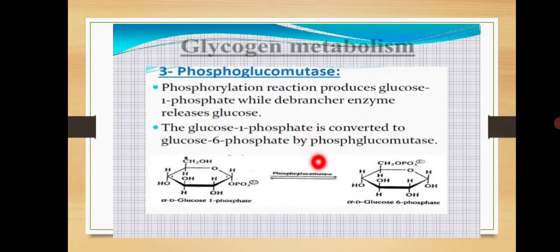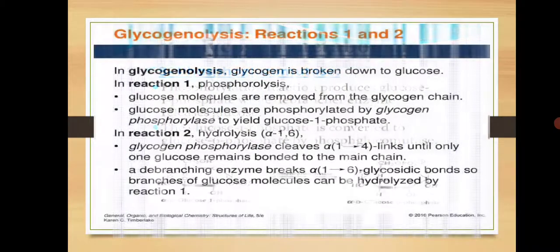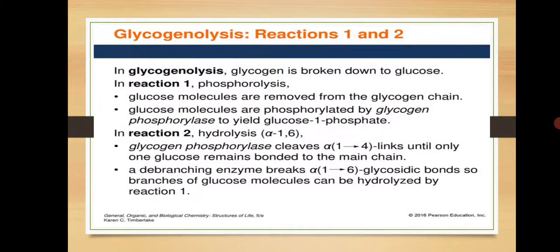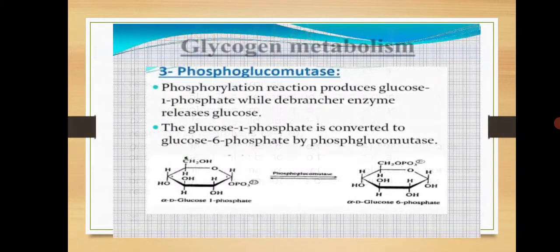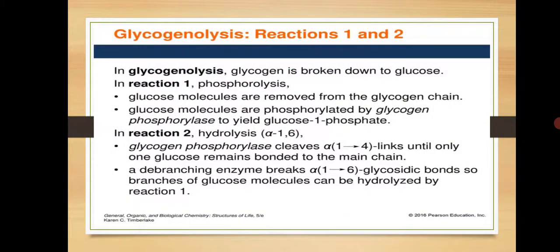So the phosphate group moves from the first position to the sixth position — this is an isomerization reaction. This transfer is carried out by the enzyme phosphoglucomutase. The glucose-6-phosphate is then converted into simple glucose in the kidney and liver, where the glucose-6-phosphatase enzyme is already present.